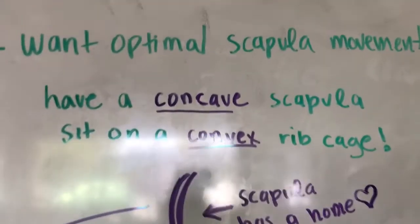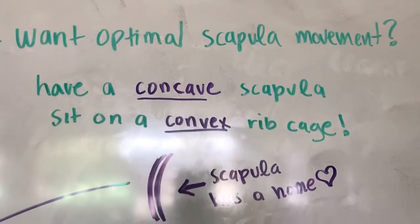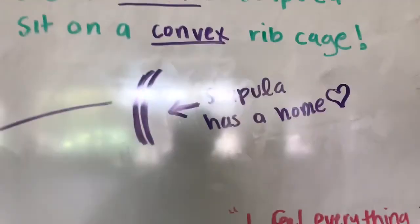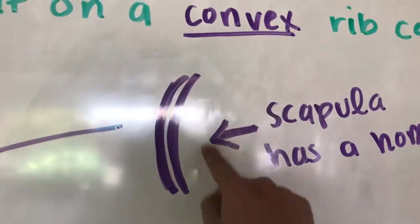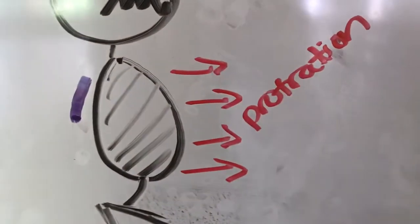So if you want optimal scapula movement, you need a concave scapula to sit on a convex ribcage like this. Not like this.